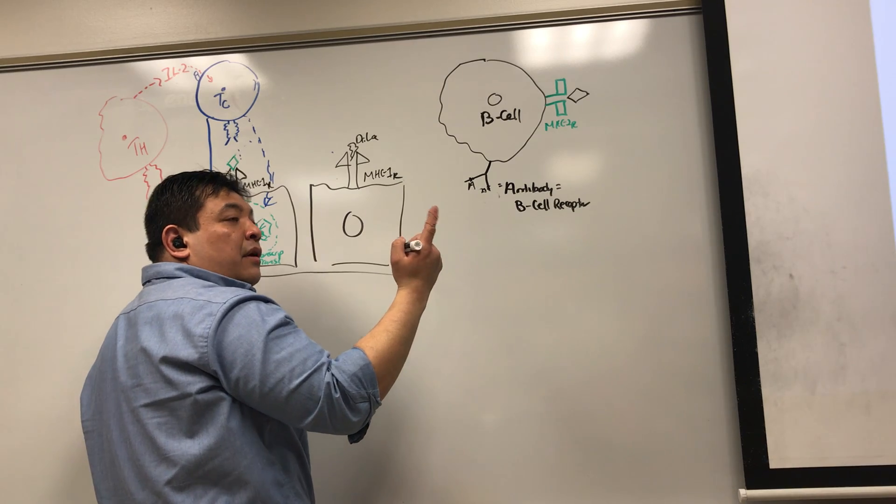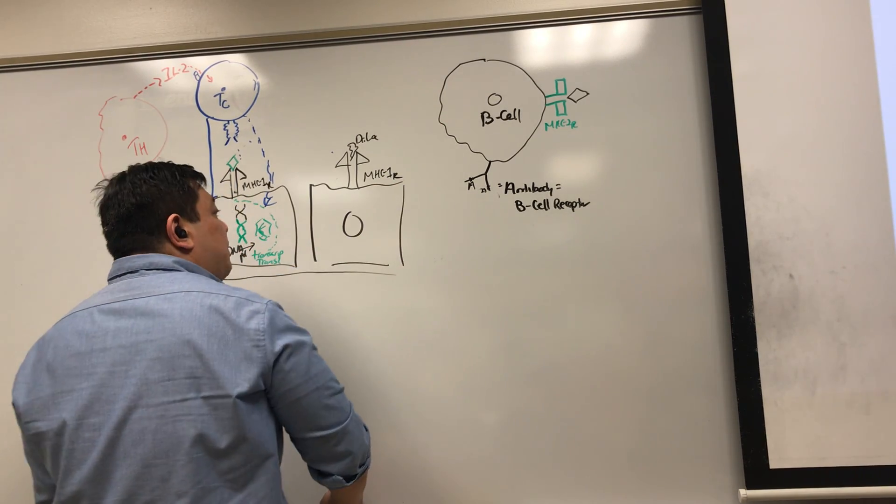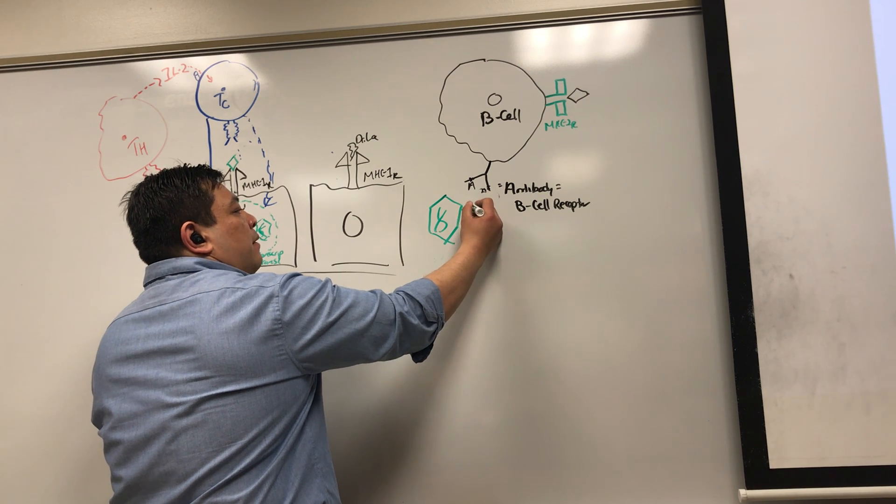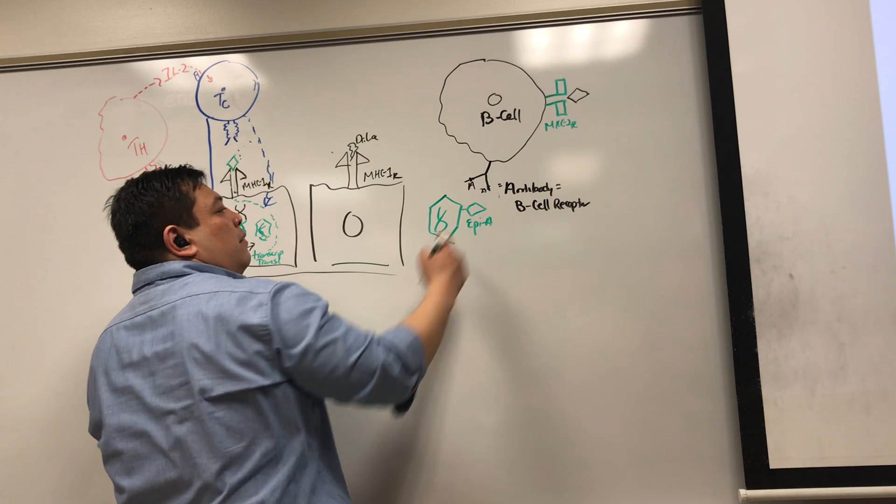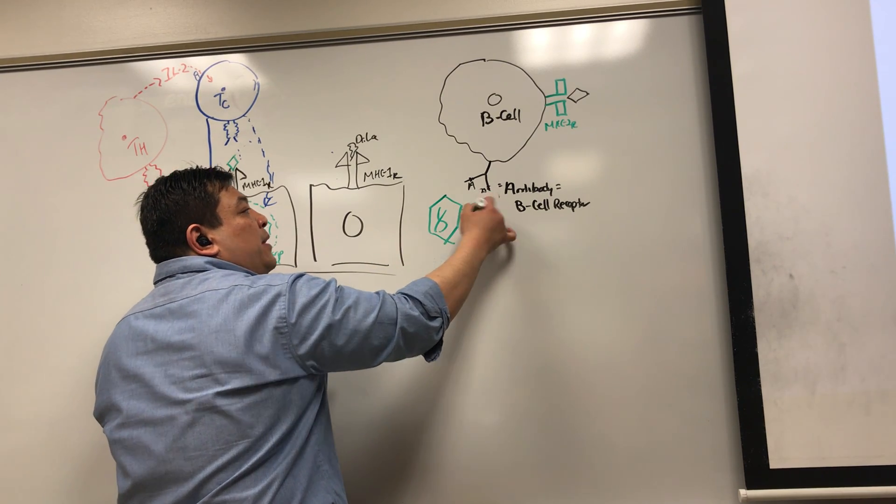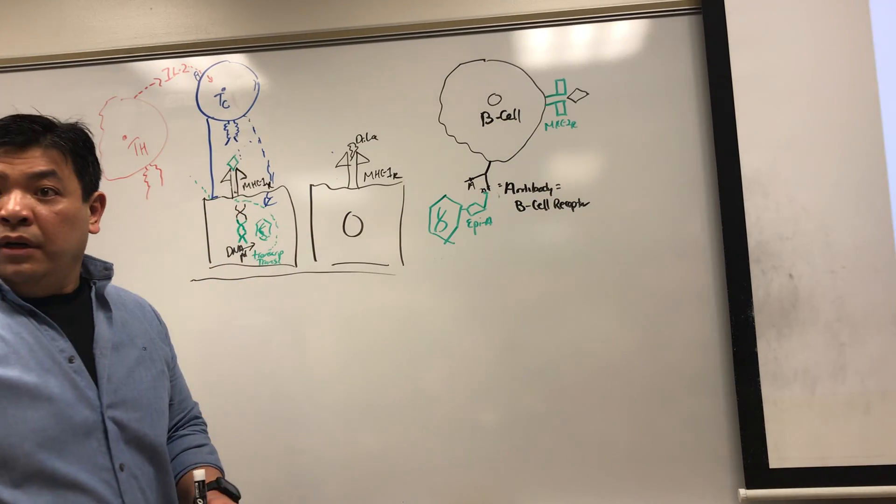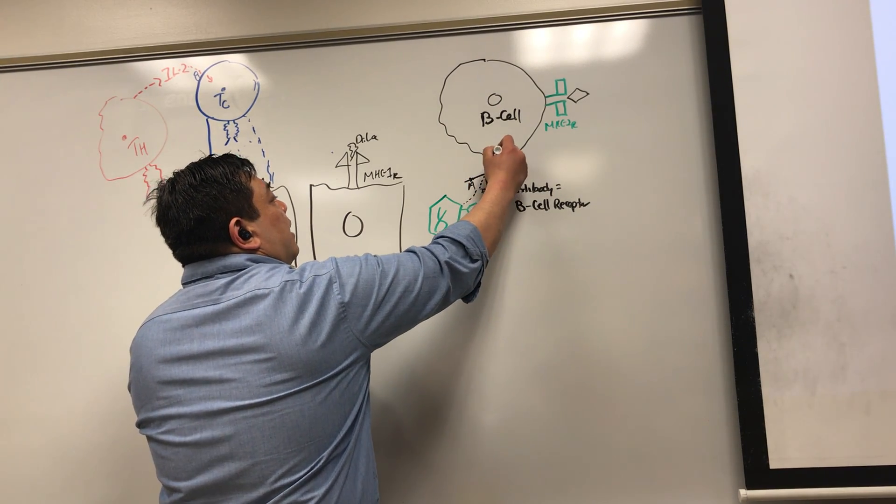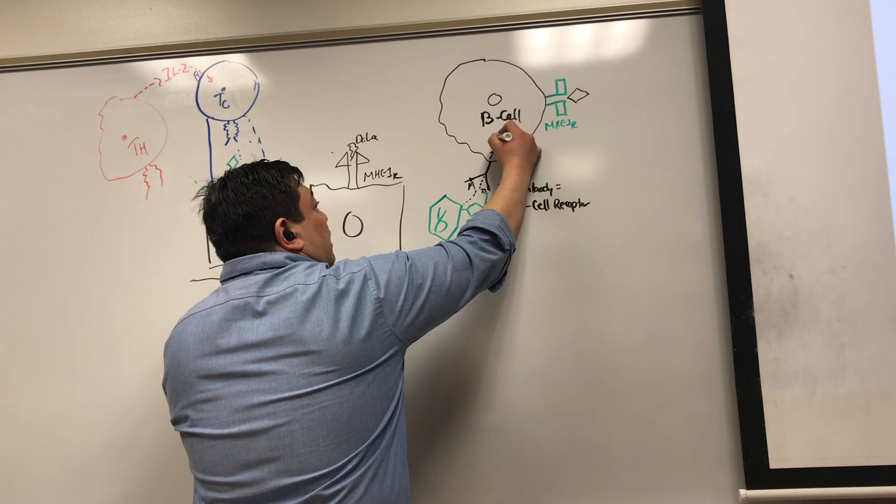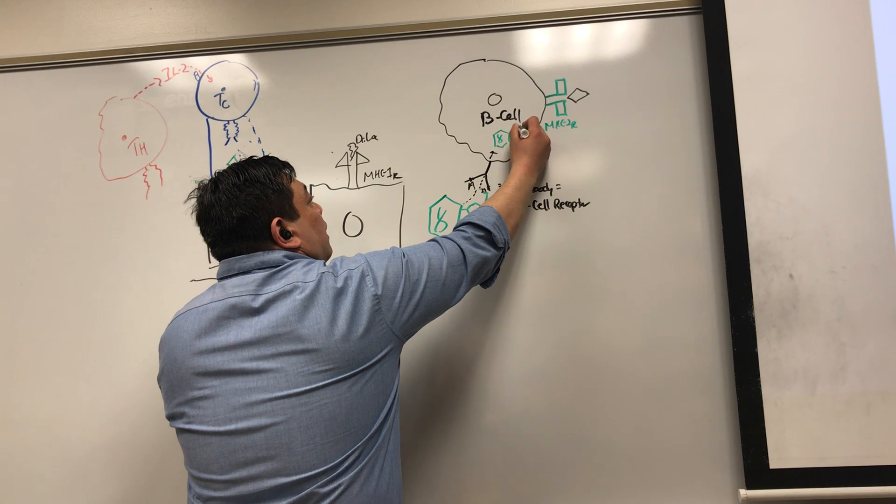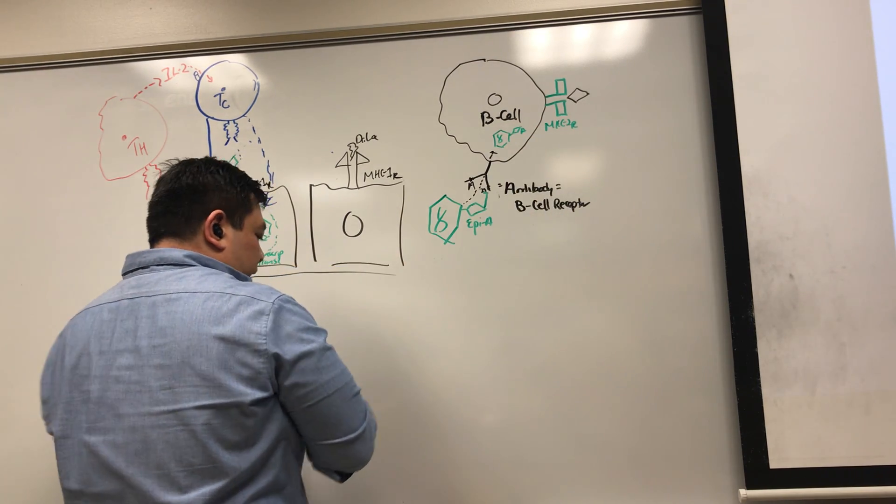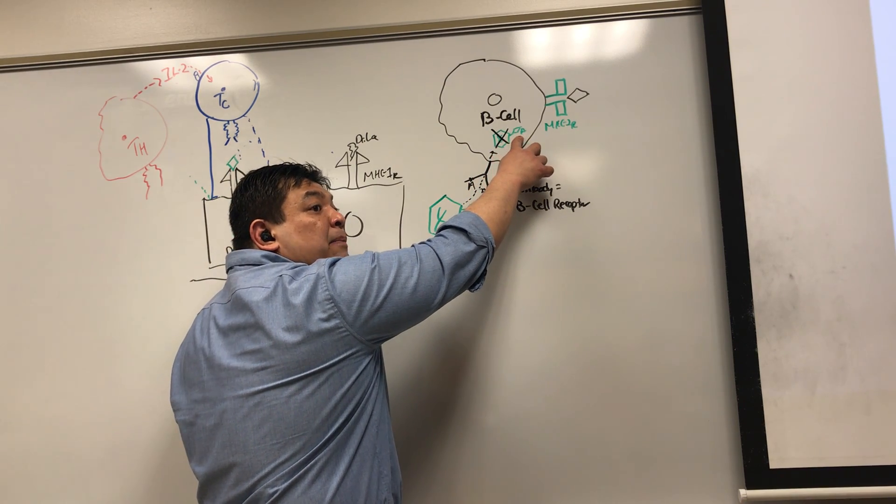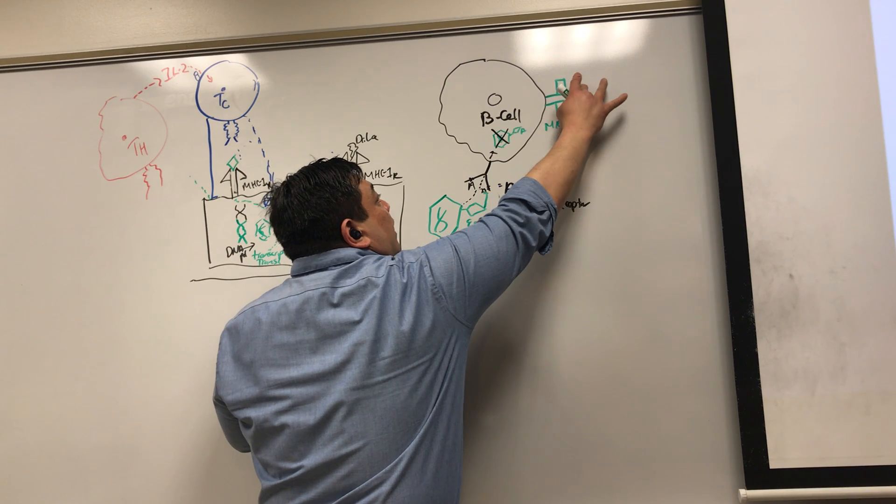So what happens? With a B-cell, a B-cell is right here. Here's varicella zoster virus, here's that epitope A from varicella zoster virus. If there is an epitope A, this epitope A binds to the antibody receptor, and the virus then is brought in. The virus then is brought into the B-cell. Then it's destroyed.